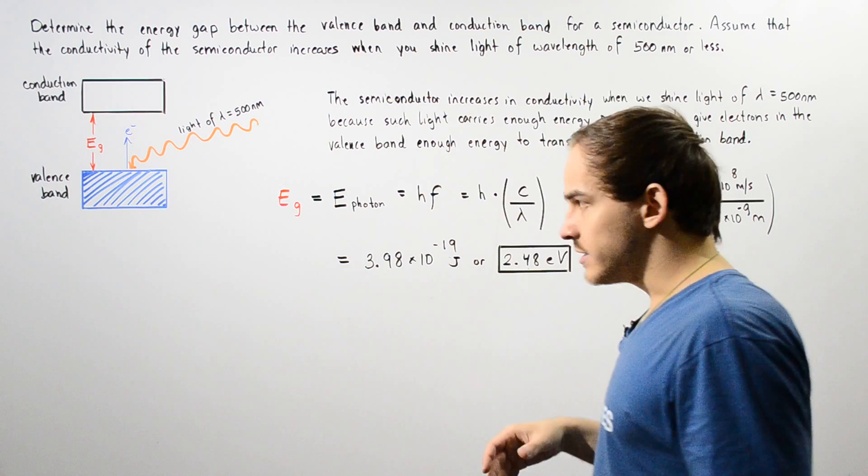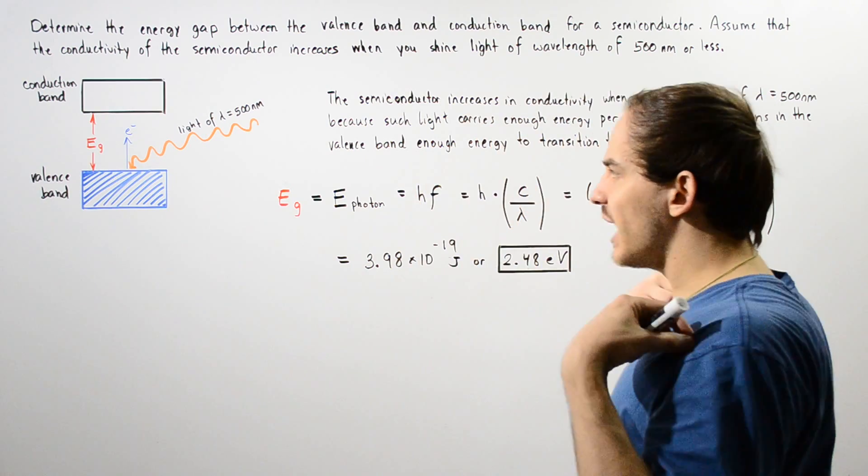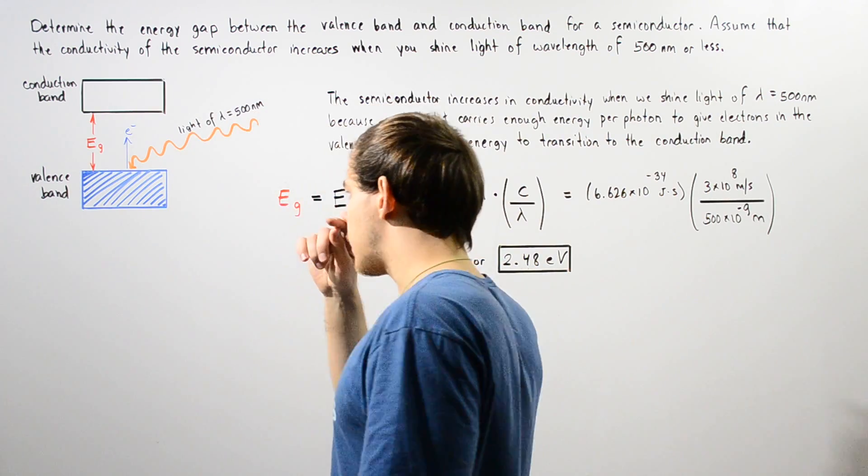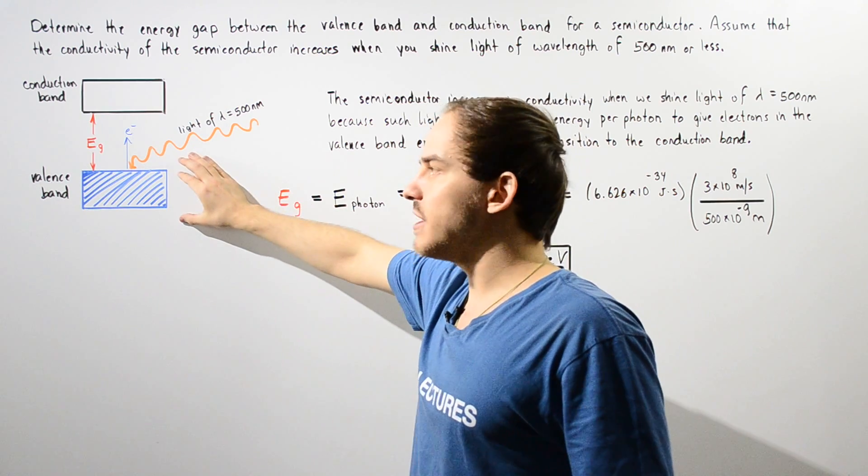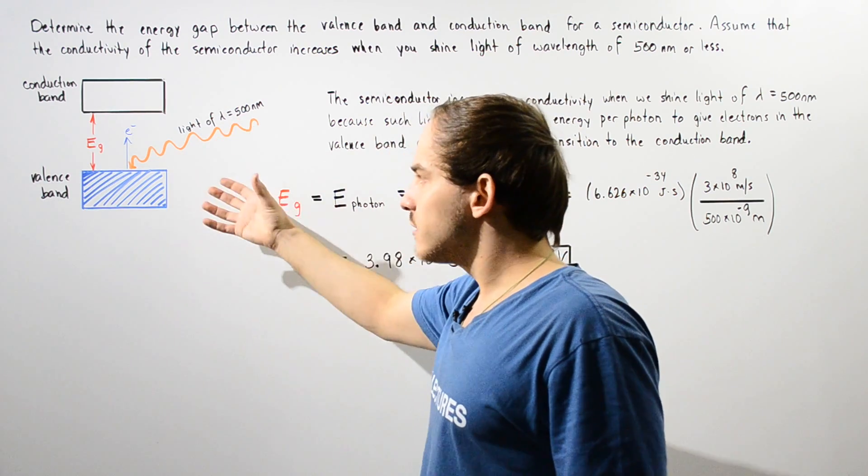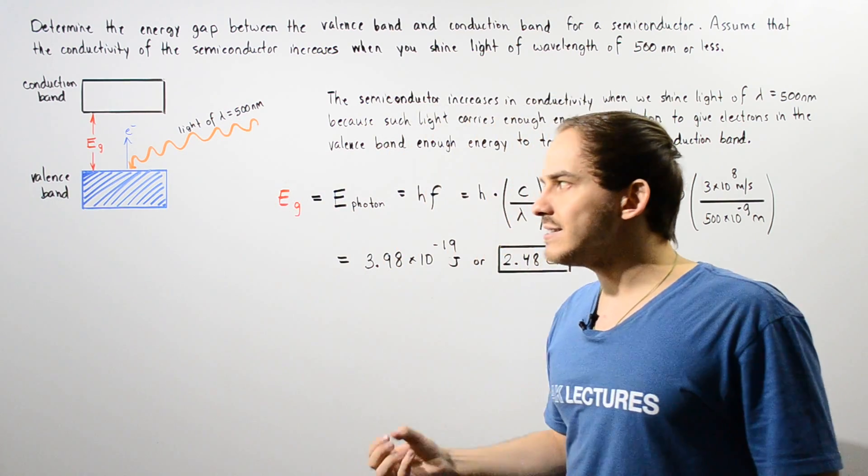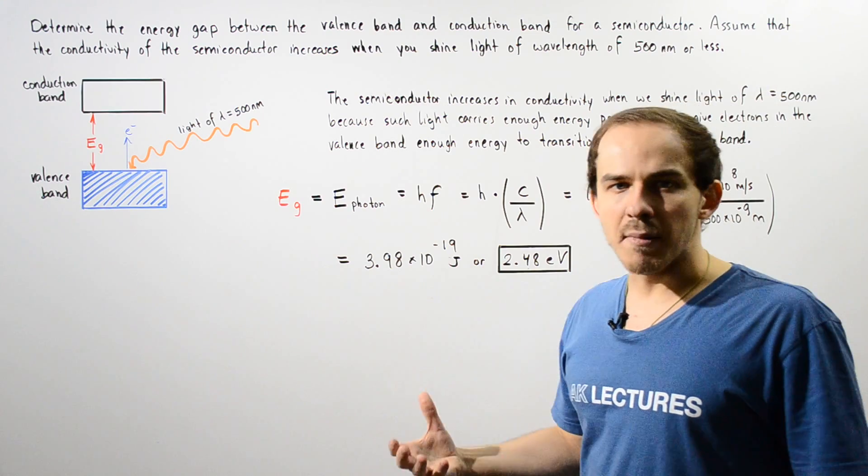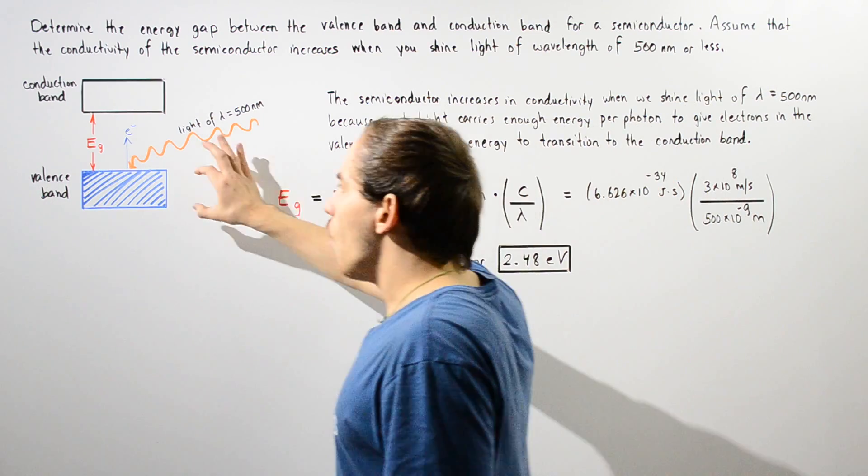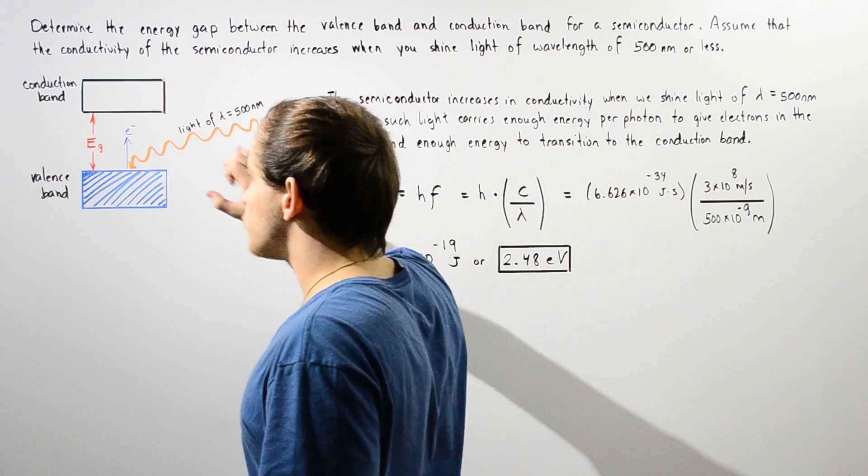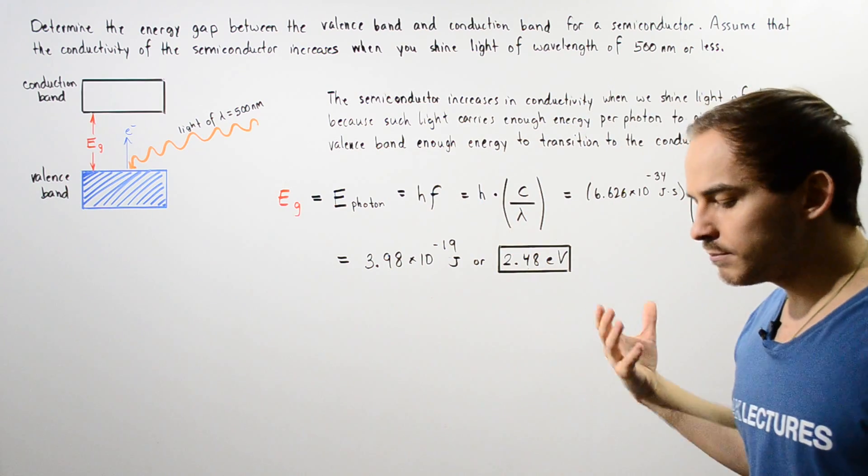So to describe what is taking place, let's take a look at the following diagram. We have the valence band, the band that contains our electrons of the semiconductor, and all these quantum states within the valence band are completely filled.